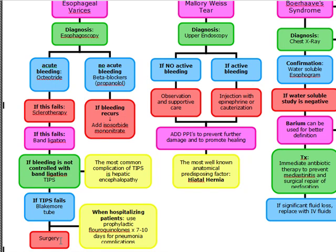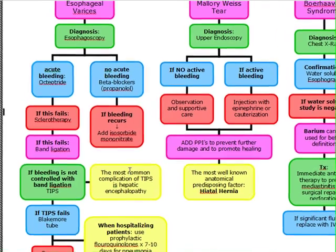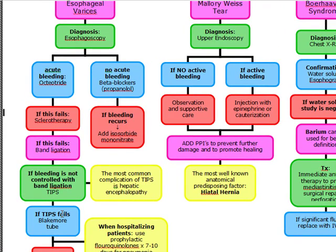To summarize esophageal varices management: it's a life-threatening emergency, so first fluid replace with two large-bore IVs, then start medical therapy with octreotide. If that fails: sclerotherapy → band ligation → TIPS (complication: hepatic encephalopathy) → Blakemore tube if TIPS fails. Always give prophylactic fluoroquinolones for 7 to 10 days.